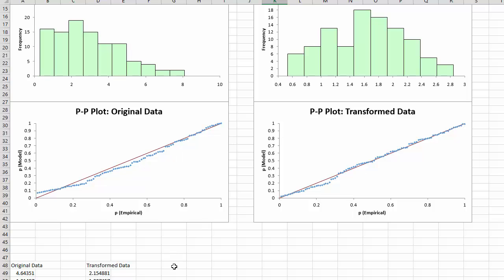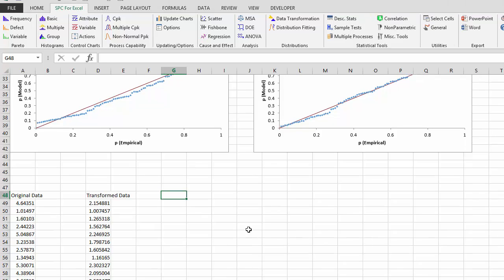The other thing that the program will do is print out the results. This is the original data, and then here is the transformed data. And what we were using in this case was the rounded lambda, which was 0.5. So the transformed data is the square root.